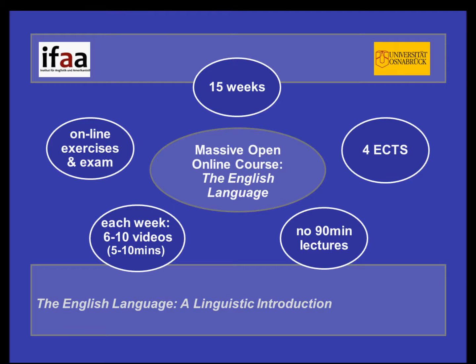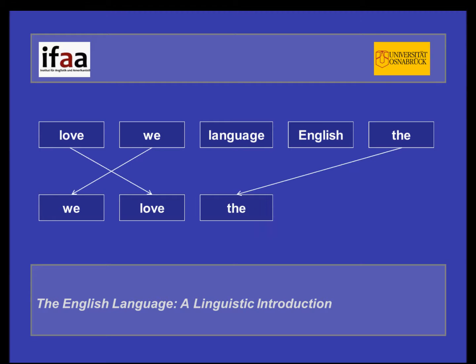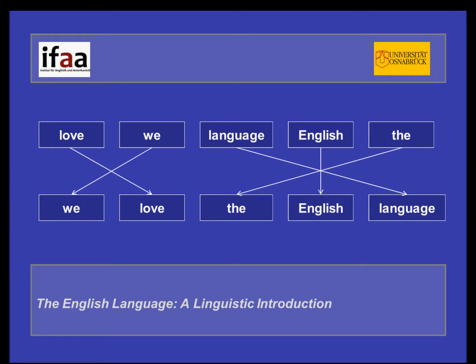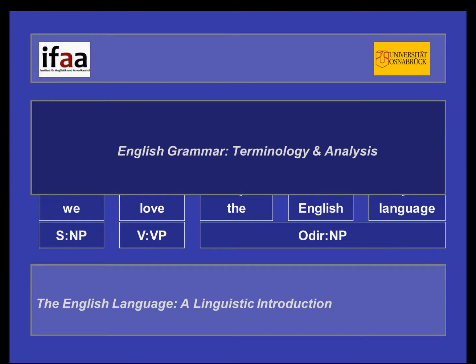So what kind of things will we cover in the course? Well, take the words: love, we, language, English, the. In order to get a fully grammatical English sentence, you've obviously got to rearrange these as: we love the English language. So English has grammar, and we will provide you with the terminology to analyse English sentence structure.